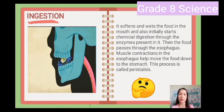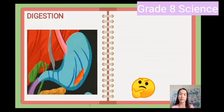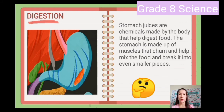This process is called peristalsis. Stomach juices are chemicals made by the body that help digest food. The stomach is made up of muscles that churn and help mix the food and break it into even smaller pieces.